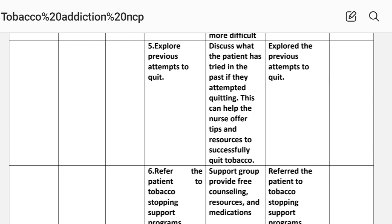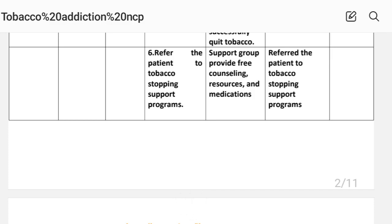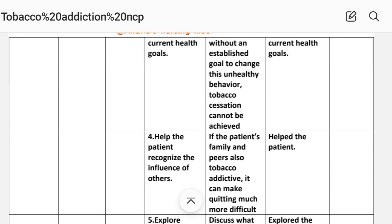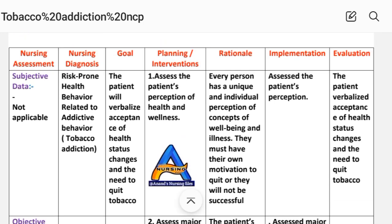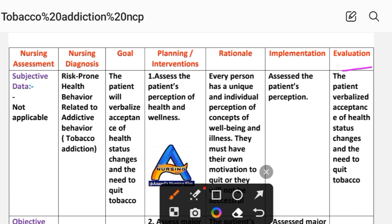Number five: explore previous attempts to quit. Rationale: discuss what the patient has tried in the past; if they attempted quitting, this can help the nurse identify tips and resources to successfully quit tobacco. Implementation: explore the previous attempt to quit. Number six: report the patient to a tobacco stopping support program. Rationale: support groups provide free counseling resources and medication. Implementation: report the patient to the tobacco stopping support program.